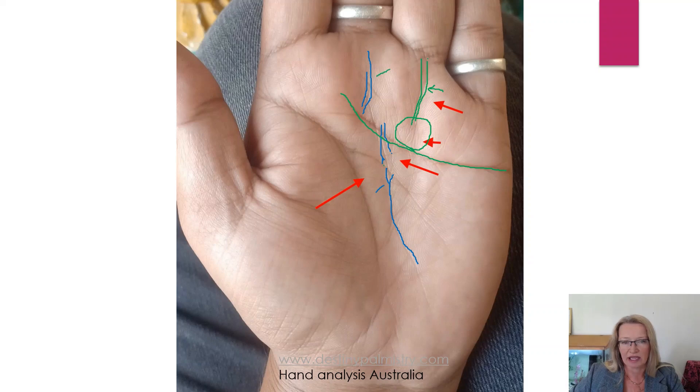Especially when it's supported by the fate line, or vice versa. The success lines support the fate line. So there's multiplicity there and is often seen on somebody who has a business.